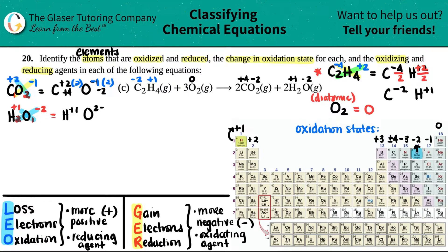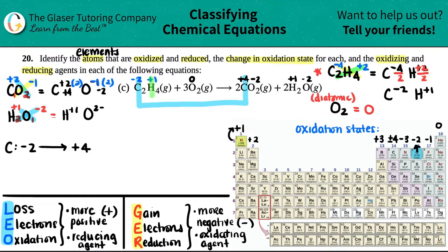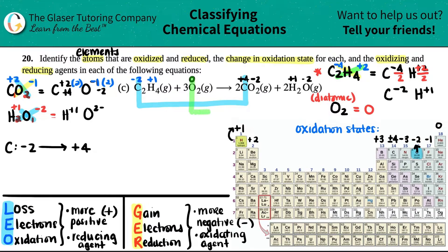Now we just answer the questions. To find what's oxidized or reduced, we see which atoms changed from reactant to product. Carbon went from negative two to positive four — that's a change. Hydrogen was positive one and stayed positive one — no change, so we ignore it. Oxygen was zero and became negative two, so oxygen also changed.